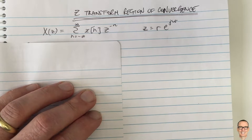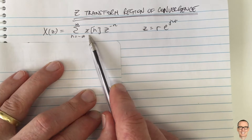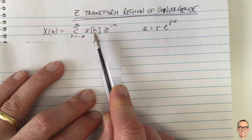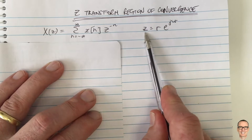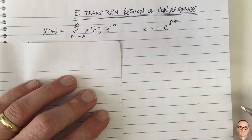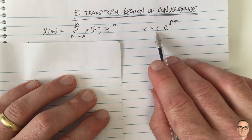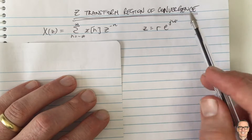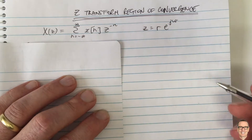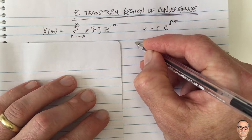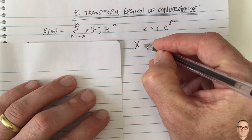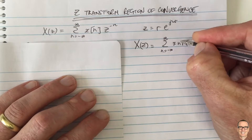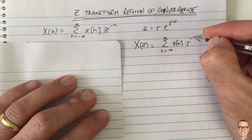Let's look at the Z-transform and its region of convergence. Here's the equation for the Z-transform: it takes a discrete-time signal x[n], which only exists at integer values of n, and transforms it into the Z-domain. Z has the form r times e to the j omega. We substitute this into the equation, giving X of Z equals the summation from n equals negative infinity to infinity of x[n] times r to the minus n times e to the minus j omega n.